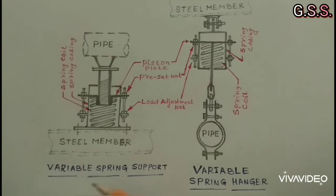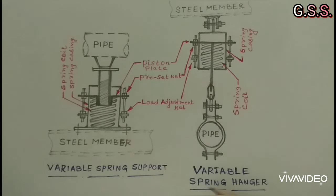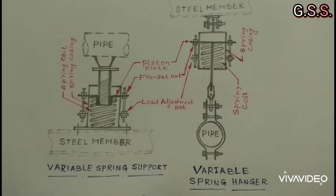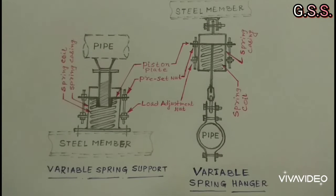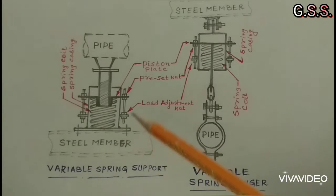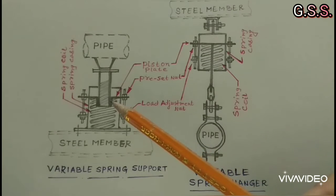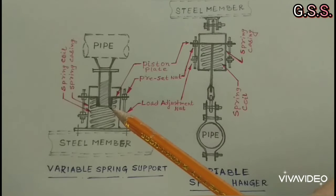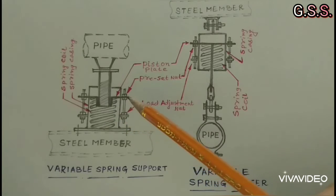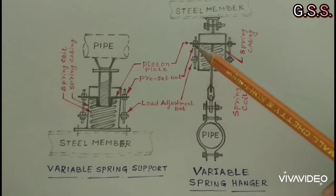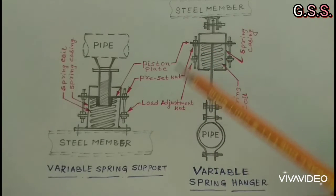This is a sketch of a variable spring support and variable spring hanger — the mechanism of both is the same. Variable spring support or hanger is delivered to site in a locked condition with the spring compressed at cold preset load. After final alignment and testing of the pipeline, the preset lock nuts are loosened and the spring takes the load.